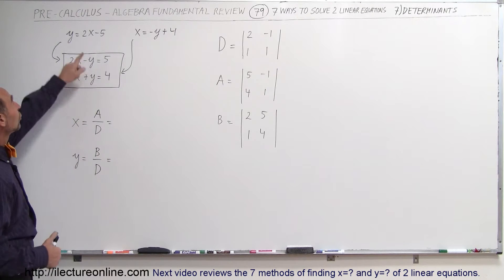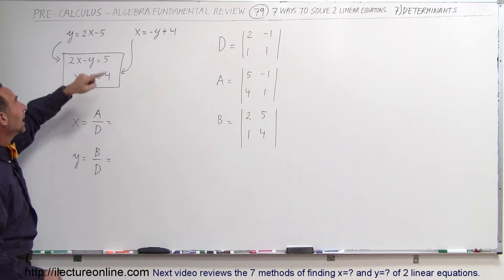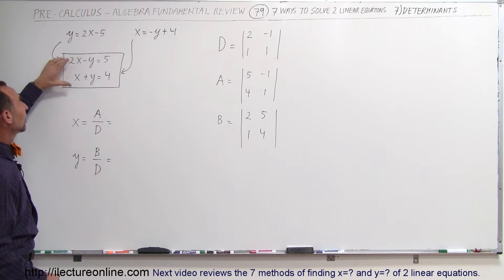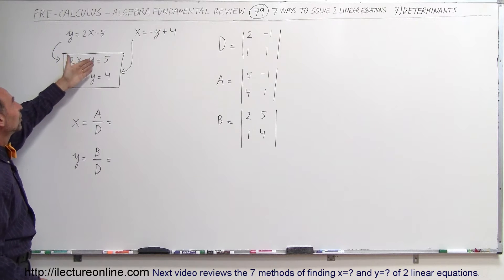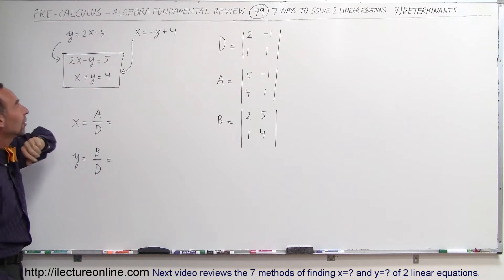And the way that works is again you take your two equations, the same one we've been using, and you rewrite them in this format just like with matrices. You want to write the x term, the y term, and then equals to the constant on the right side.